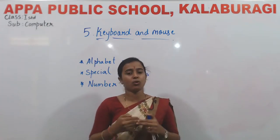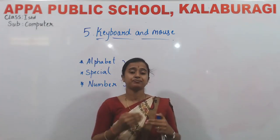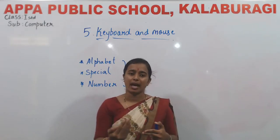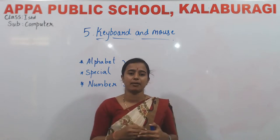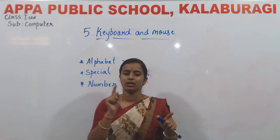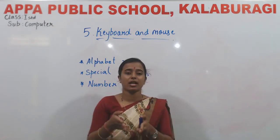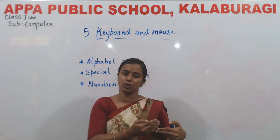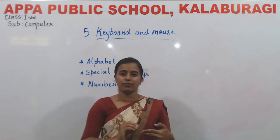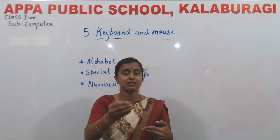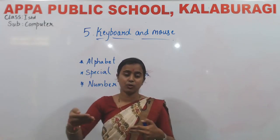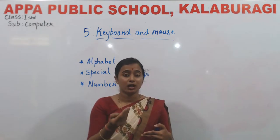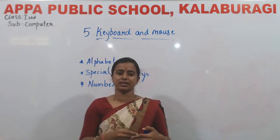Next is caps lock key. What is the use of caps lock key? Using the caps lock key, we can type capital letters. When you press the caps lock, the light will appear and you can type only capital letters. When you press the caps lock key again, the light will turn off. Then when you press the letter keys, the letters will be in small letters.